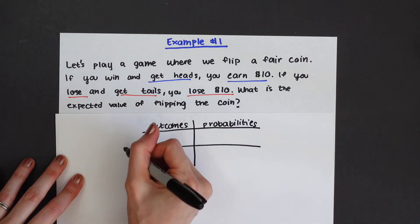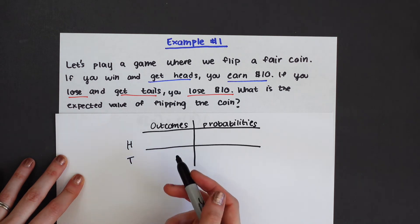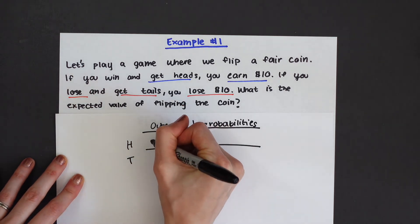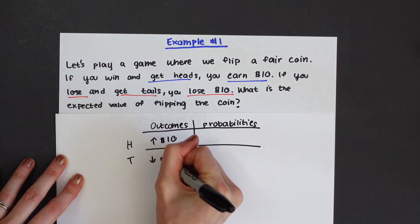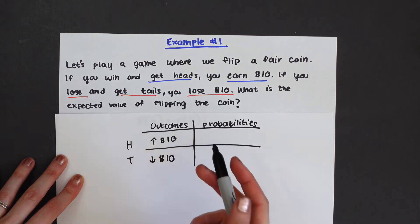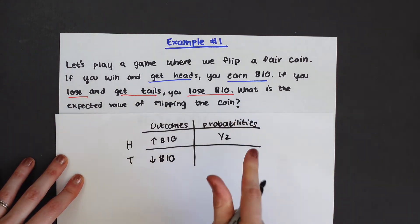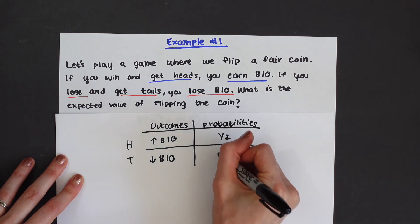For outcomes we can either get heads or tails, winning or losing, and the outcome would be we'd be making ten dollars for heads or we'd be losing ten dollars for tails. Now when it comes to probabilities, what is the probability of flipping a head? It's one half. And then the probability of flipping and getting tails is also one half.